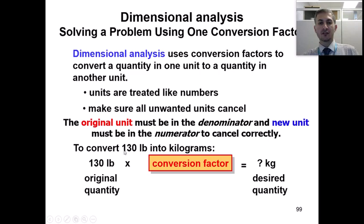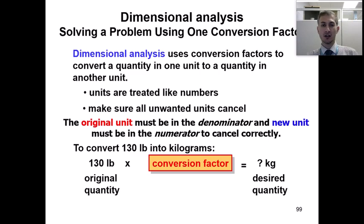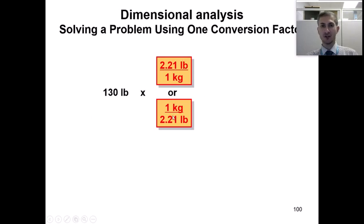We are going to convert 130 pounds into kilograms. So we are converting this unit — pound — to kilograms. The original unit given by the problem is the pound. This is the original number and original unit that we have. We always start with the original unit. We write the number and unit given by the problem — 130 pounds — then we need to write one conversion factor. To write the conversion factor, we look at the table we are given and note that pound is our original unit.